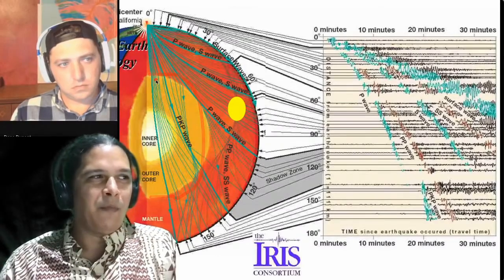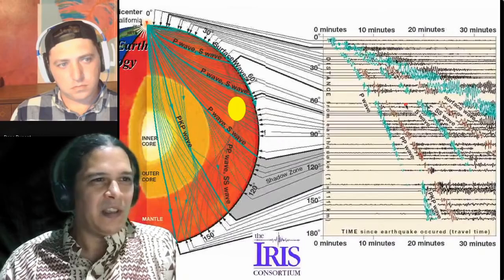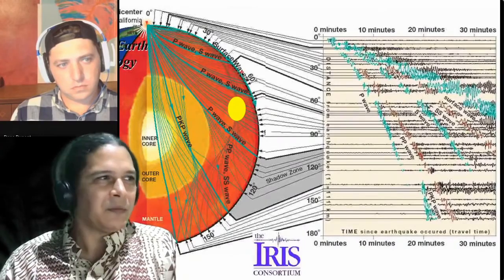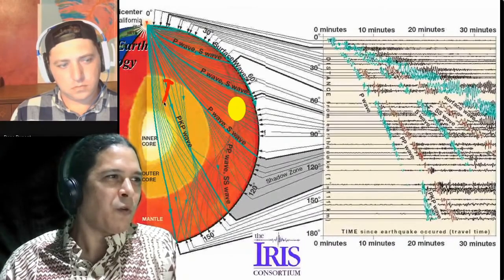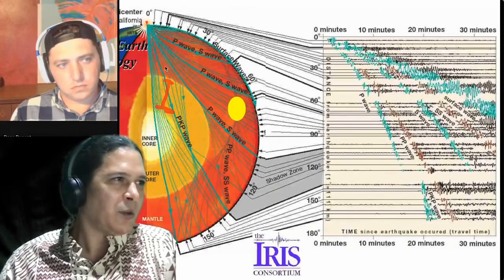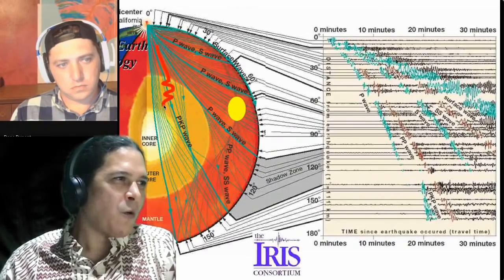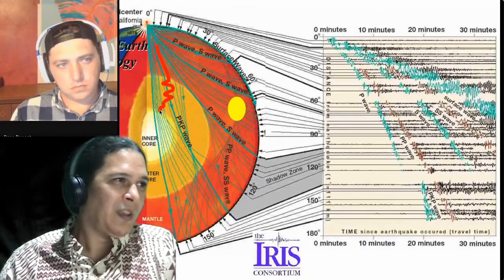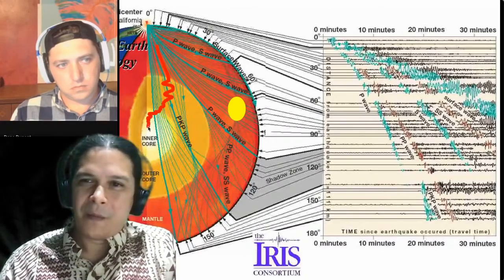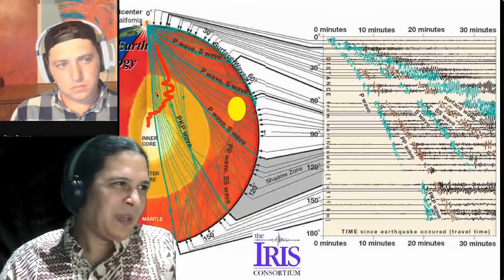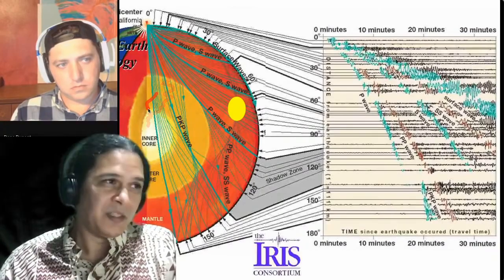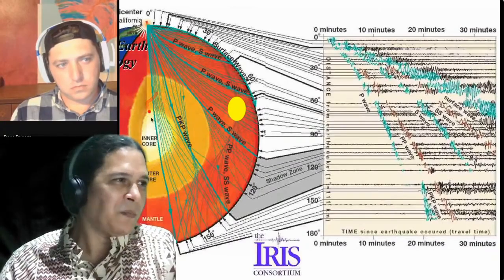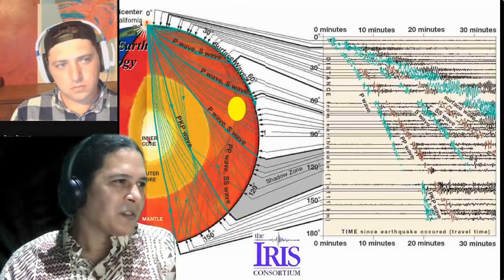We can't see the core or these different layers directly, but we know how earthquake waves behave moving through it. Interestingly, S waves can't go through liquid — you can't shear liquid — so S waves disappear in the outer core, which is how we believe it's liquid. They reappear in the inner core because P waves get refracted there and create some S waves as well.